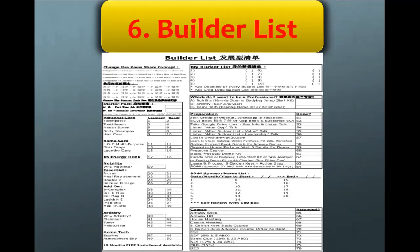Once they choose option A, B, or C, you move to the product box. We have personal care, home care, accessories, energy drinks, Nutrilite, artistry, and home tech. All of these products are compulsory for self-use. As a builder you must know you are not a customer — a customer can choose whatever they like, but as a builder you need to try the high-demand products in the market so you can use them, know them, share them, and earn.